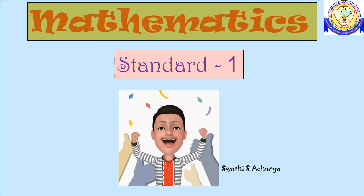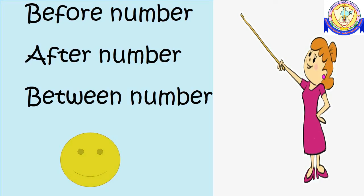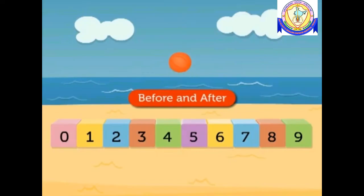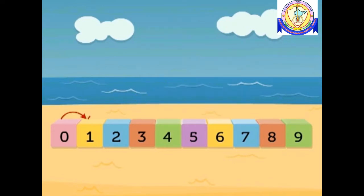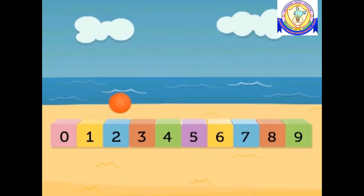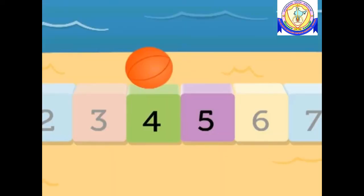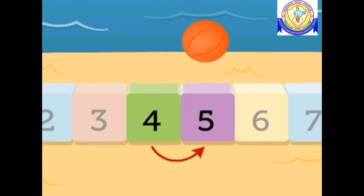Hey friends, let us learn about numbers that come before, after, and between. Let's play with a ball and learn about before and after. What do you mean by after numbers? When we count forward from a given number, we get the numbers after. The ball is on number four — which number will you get when you count forward one number? Number five! Thus, five comes after four.